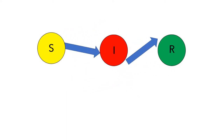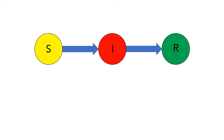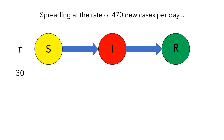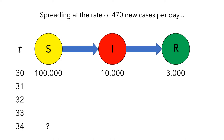Now let's look at a concrete example. Let's suppose that the one-legged R disease has been spreading for 30 days in a population, and it has been spreading at a rate of 470 new cases per day for the last several days. Let's say that there are currently 100,000 people who are susceptible, 10,000 people who are infected, and 3,000 people who have recovered. If this rate stays constant for the next four days, how many susceptible people would there be? Pause the video and think about how you would figure this out.